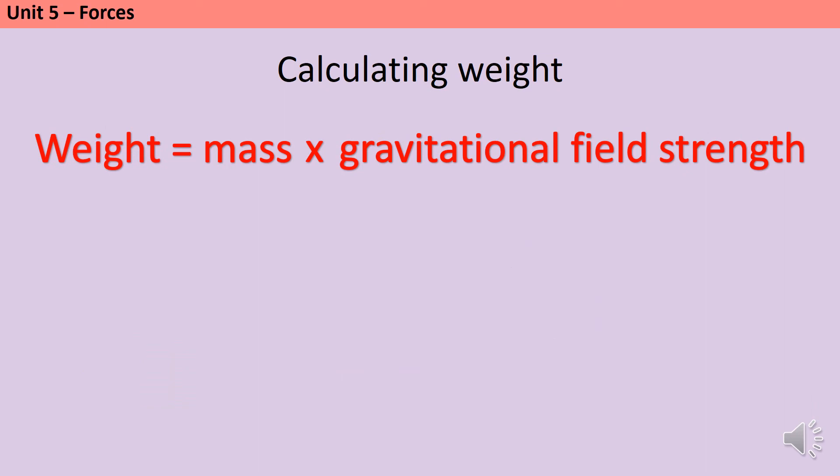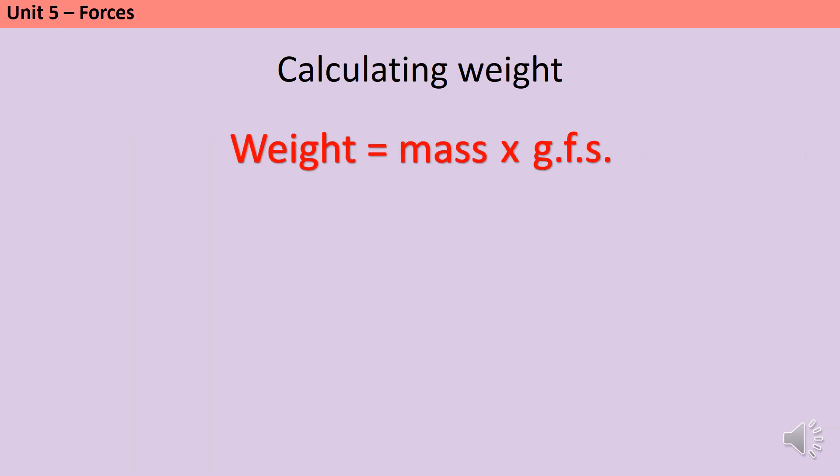As with all your GCSE physics equations, you do need to be able to rearrange them, so if we make this slightly more manageable... Now, what if I want to calculate the mass of an object when I know its weight and I know the gravitational field strength of the planet that it's on? I need to rearrange my equation, which means moving it round so that I have mass on its own on one side of the equation. Right now, mass is multiplied by gravitational field strength. In order to get rid of something from one side of the equation, whatever that is currently doing, we need to do the inverse operation. So if it was added on, then we would subtract it.